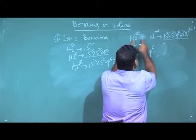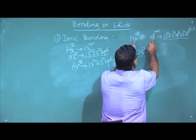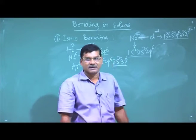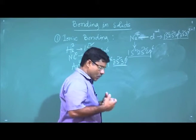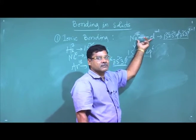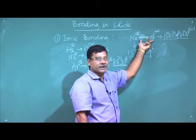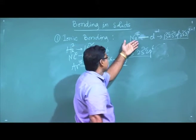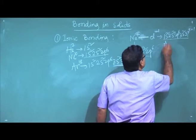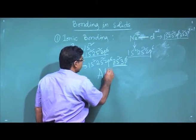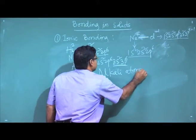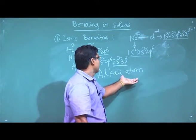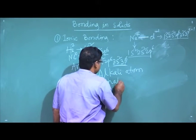All alkali atoms, if they leave one electron, get a stable configuration. All halide atoms — chlorine, fluorine, iodine — if they accept one electron, will achieve a stable electron configuration. So whenever they get the chance to give or take electrons, they prefer that environment.